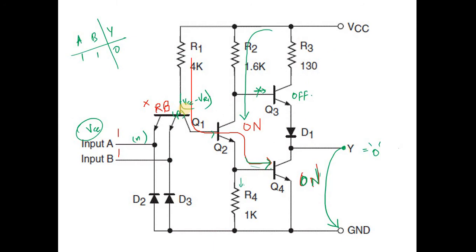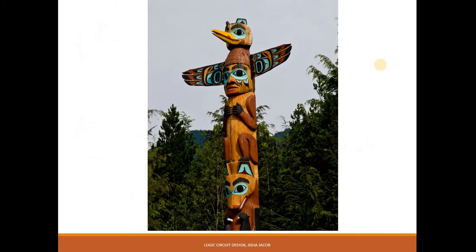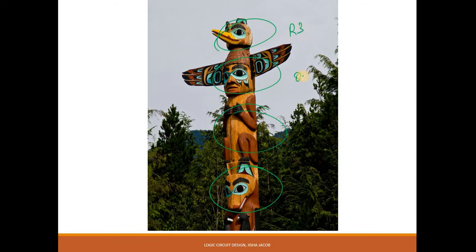Now let me give you a better understanding of the output arm. The outermost arm consists of R3, Q3, D1 and Q4. This forms a totem pole pair. A totem pole is actually a cultural monument — it depicts memories, culture, dances, songs and even ancestors. Our totem pole in electronics just happens to have one structure on top of another, following the same physical arrangement: R3, Q3, D1 and Q4 stacked similarly.